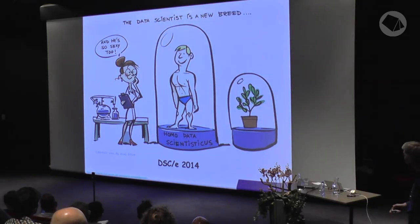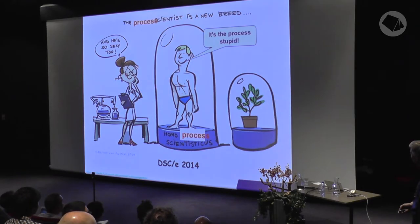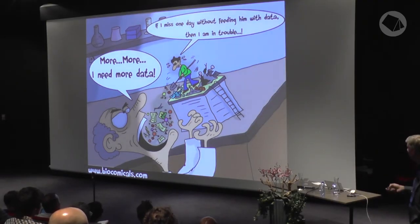A picture was made about the data scientist as a sexy profession. But I think the picture is wrong — it should talk about the process scientist. It is not just about analyzing data. All the examples I gave have a process component. The customer journey is a process. Stress-related problems are a process. All of these things are processes. You don't want to improve data storage; you want to improve the processes or the products behind it. It's about trying to answer questions that really have value for a particular organization — to help improve the processes.